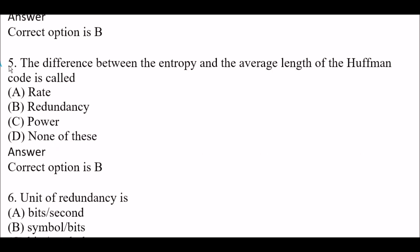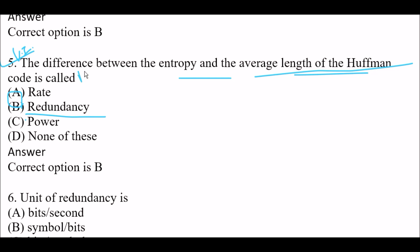Next question: The difference between the entropy and the average length of the Huffman code is called — Option A: rate. Option B: redundancy. Option C: power. Option D: none of these. This is a very important question. The right answer is Option B, redundancy. The difference between the entropy and the average length of the Huffman code is called redundancy.